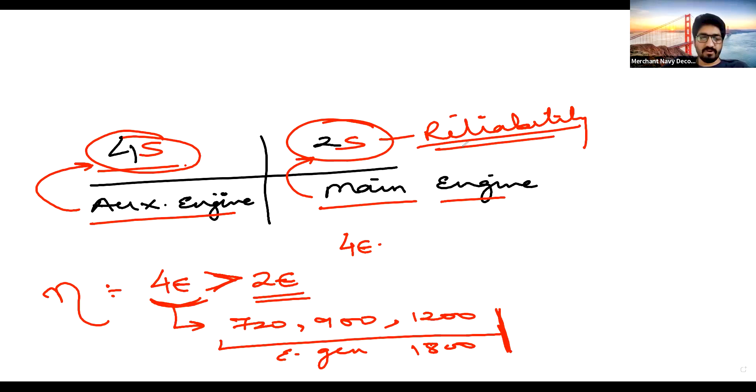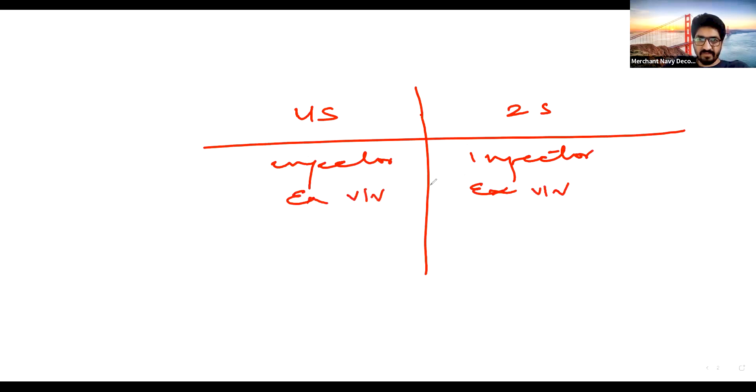Reason is less number of moving parts. Less number of moving parts are there. So if you compare between four stroke and two stroke engine, number of parts in two stroke we have injectors, here also we'll have injectors, exhaust valve, and we don't have suction valve in two stroke engine, ports are there. So this many parts are same but in four stroke there are other parts.